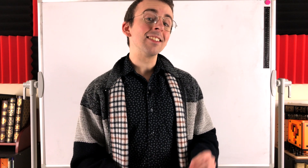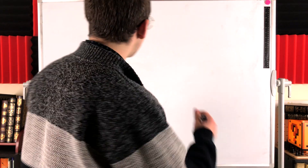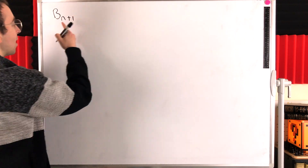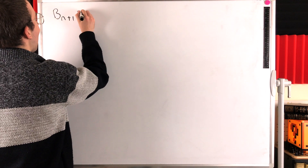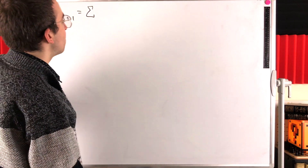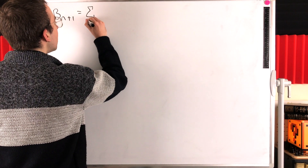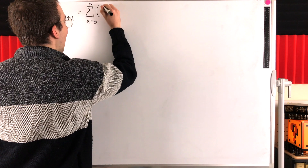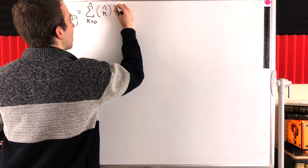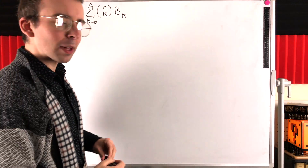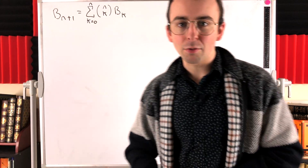The bell number BN is the number of partitions of a set of N objects. In today's Wrath of Math lesson, we'll be proving that to find a bell number — say BN+1, the N+1th bell number — we can calculate this using the previous bell numbers by summing from K equals 0 to K equals N of N choose K multiplied by the bell number BK. This is the recurrence relation for the bell numbers we'll be proving today.